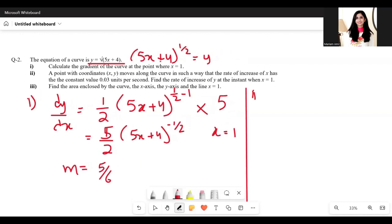Part 2: A point on the curve (x, y) moves along the curve in such a way that the rate of increase of x is a constant 0.03. So dx/dt is 0.03. Find the rate of increase of y.